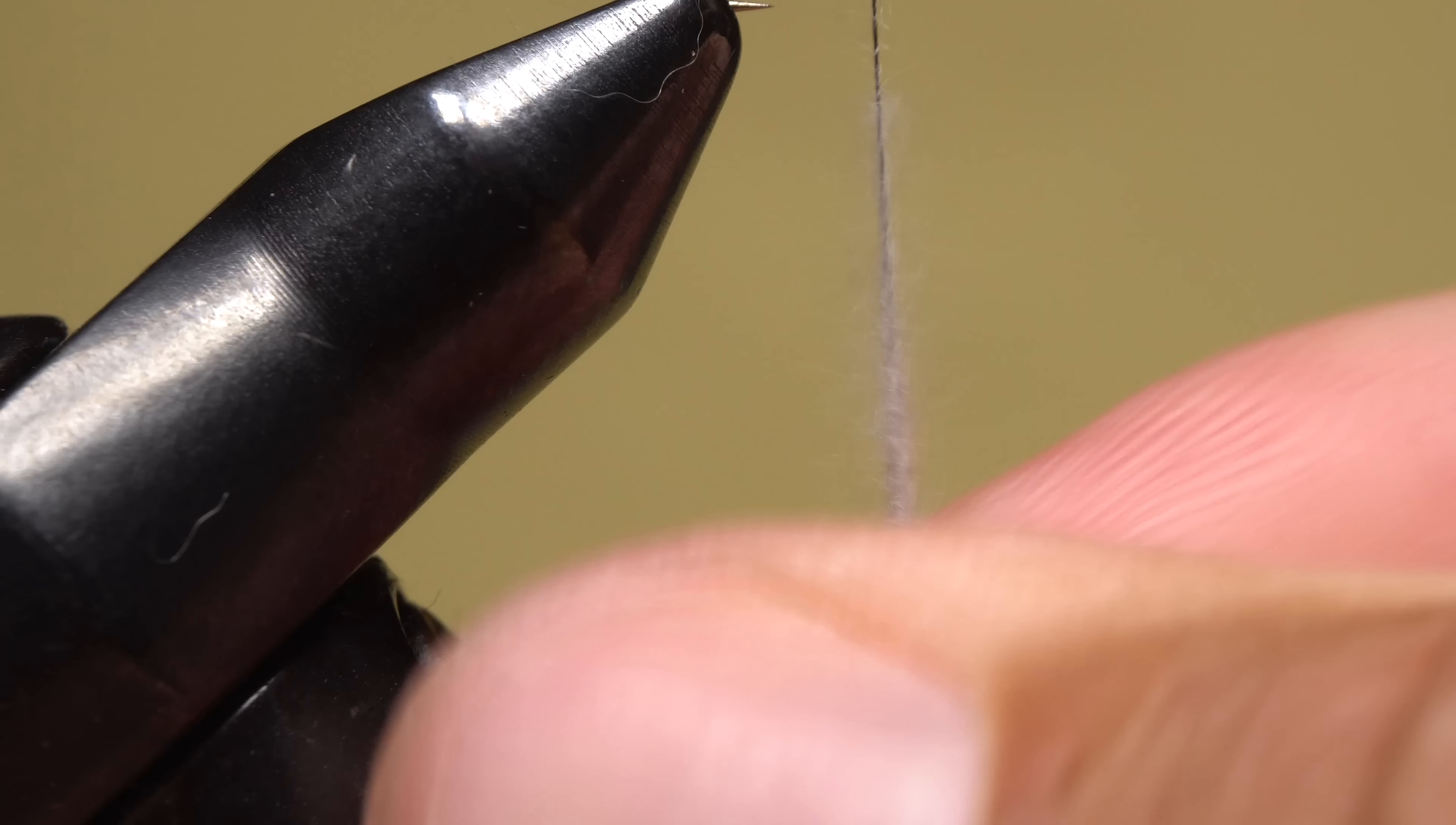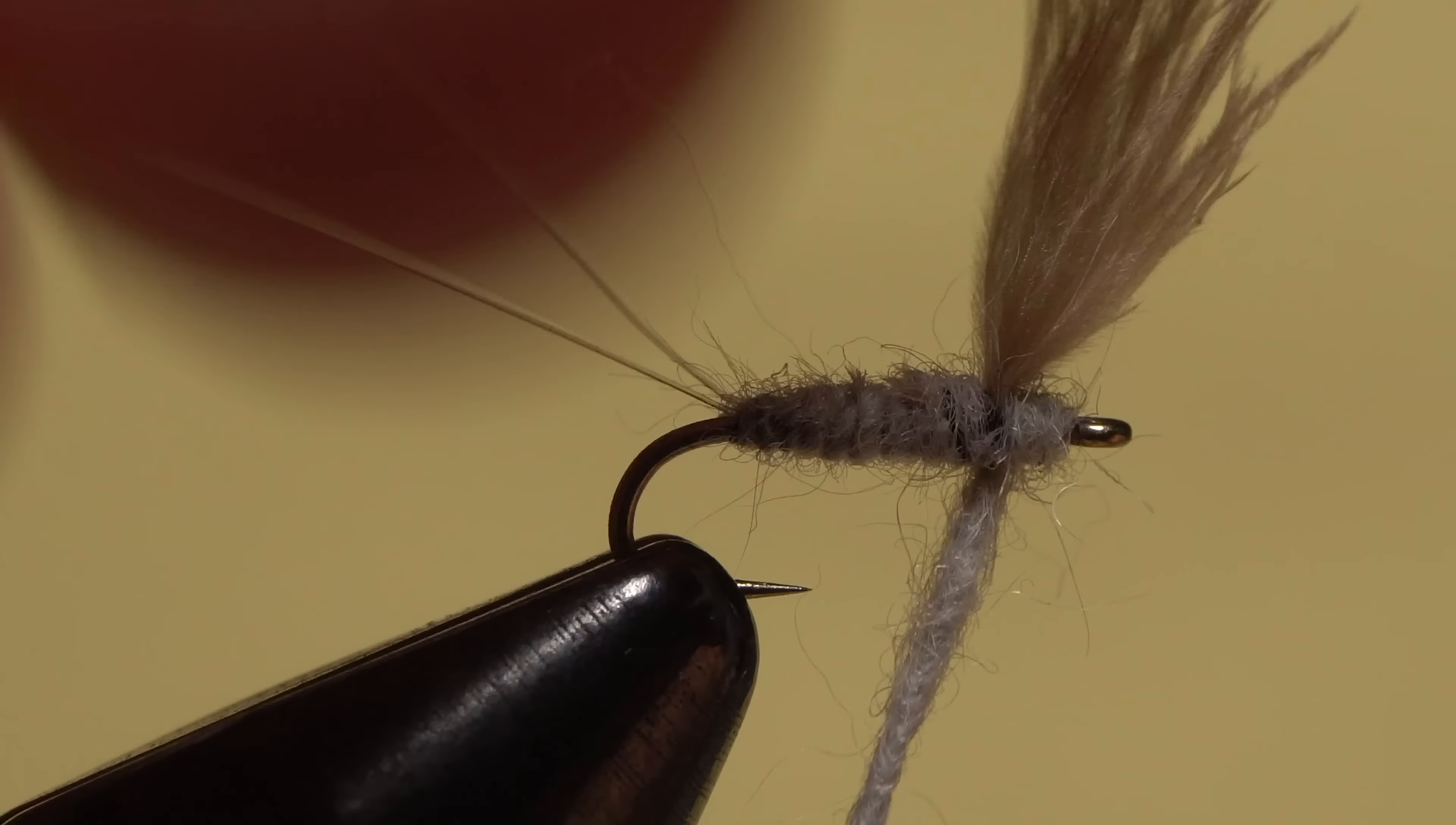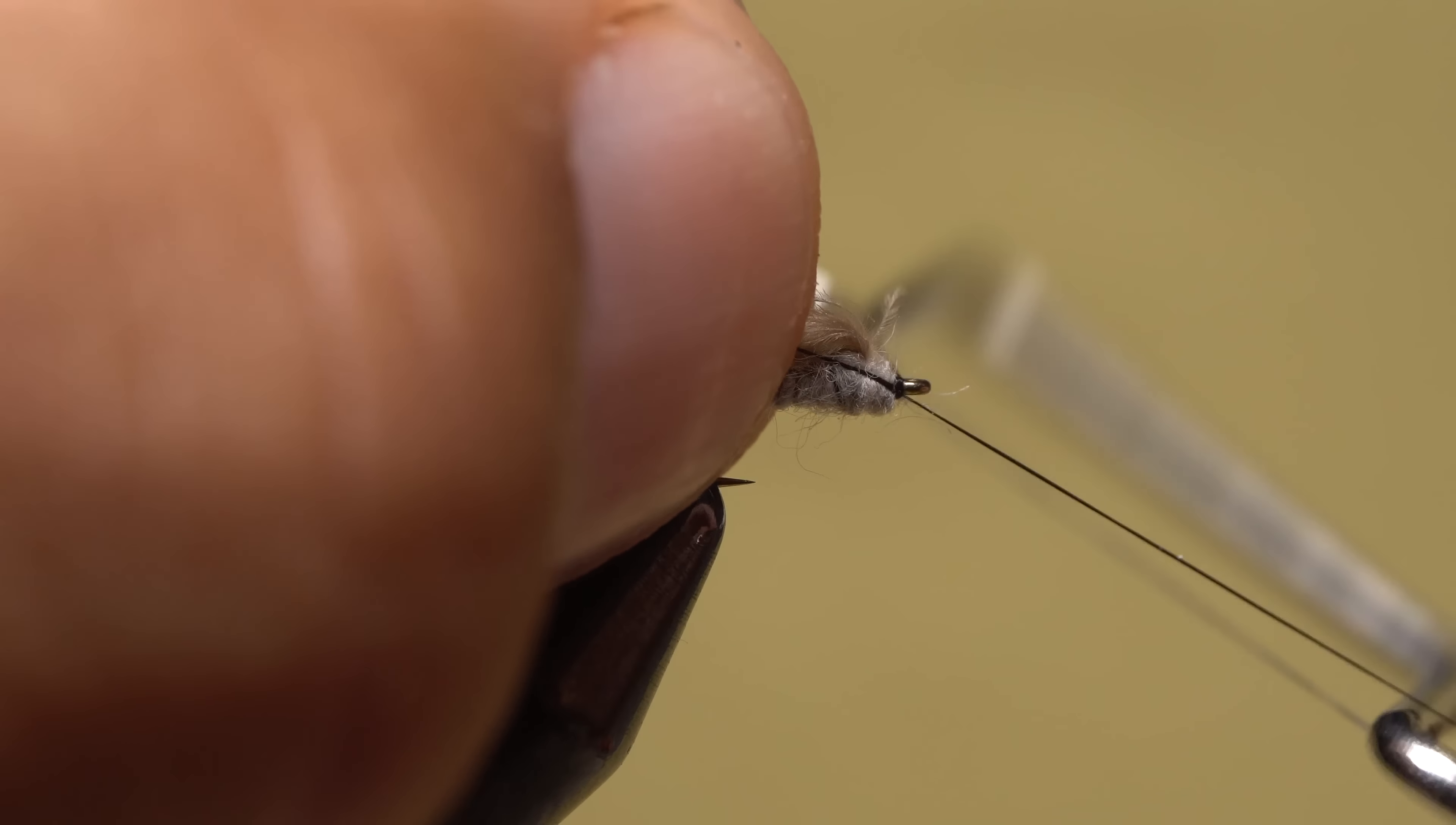Once again, reach for your beaver dubbing and this time pull just the smallest clump free from the packet. Seriously, don't overdo it here. Create a very short, fine noodle on your tying thread. Then, take wraps with it both in back and in front of the wing to build up a thorax on the fly and support the wing.